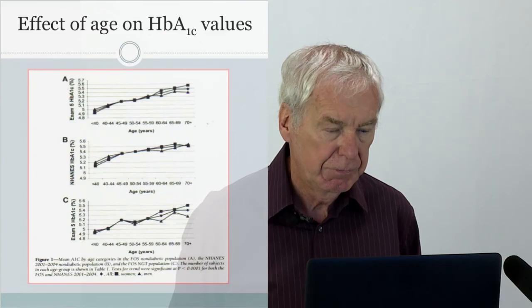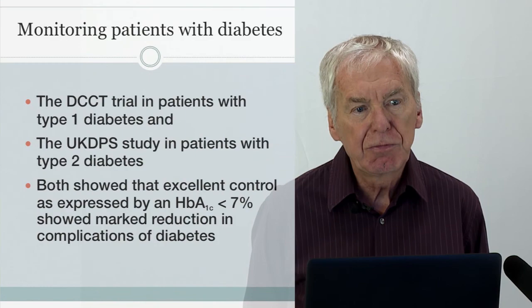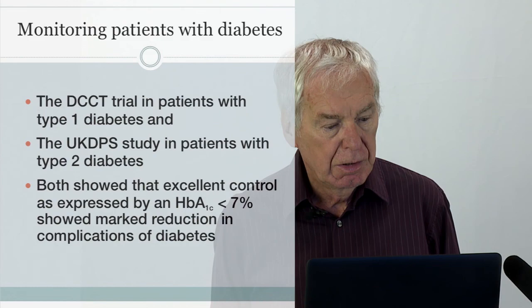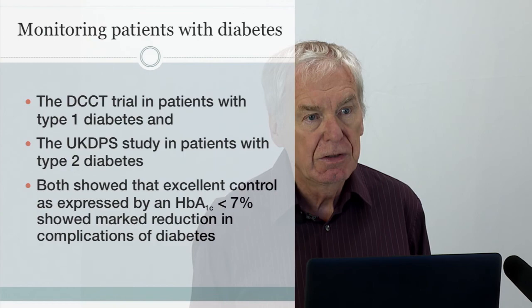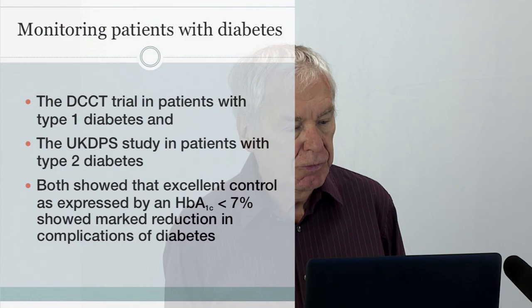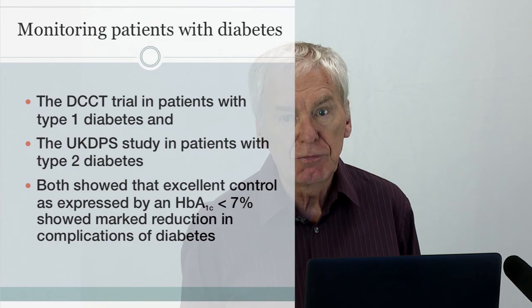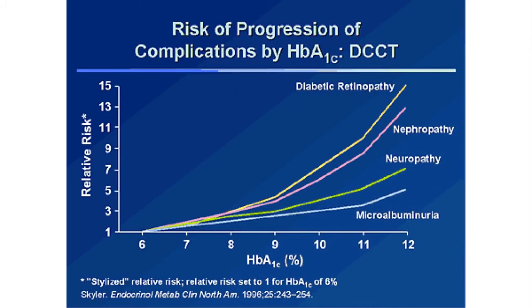Having issued some caveats about using A1c for diagnosis, let's turn to the second use: monitoring patients with diabetes. Two large trials — the Diabetes Control and Complications Trial in type 1 diabetes and the United Kingdom Prospective Diabetes Study in type 2 — showed that excellent control, as expressed by an A1c of less than 7%, produced a remarkable reduction in the complications of diabetes, particularly retinopathy.